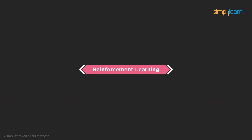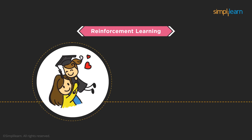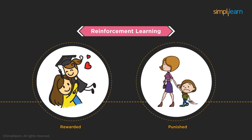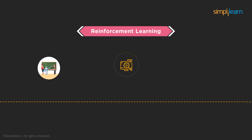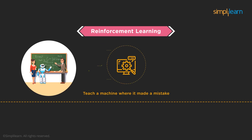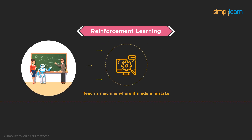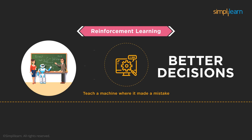Reinforcement learning is very similar to how children learn. When you were a child, you were rewarded for your good deeds and punished for making mistakes — this reinforced you to perform better than you were before. Similarly, users, just like parents, teach a machine where it made a mistake and where it was right. Thus, the machine develops intelligence and makes better decisions in the future because of this reinforcement.